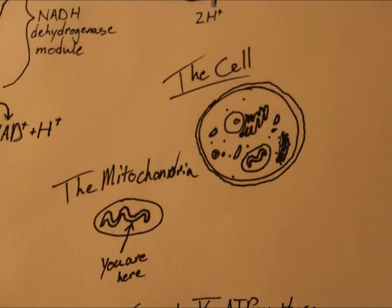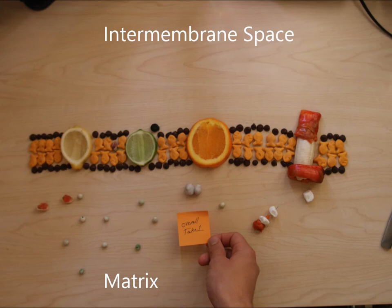The electron transport chain is a vital process of all cellular respiration. It occurs within the mitochondria, located in every cell in your body. It essentially occurs between the matrix and intermembrane space across the inner mitochondrial membrane.